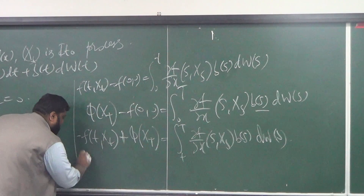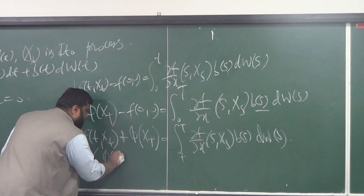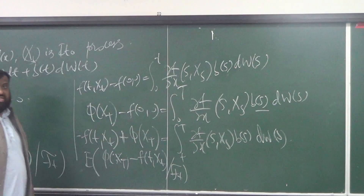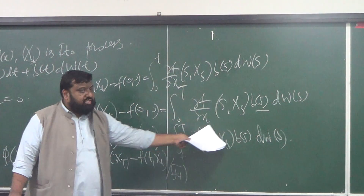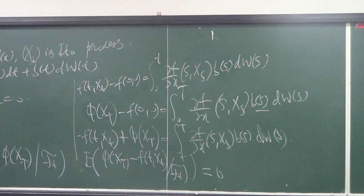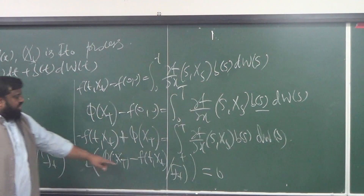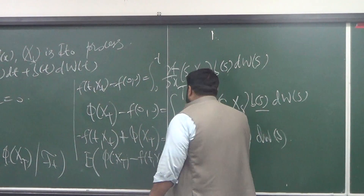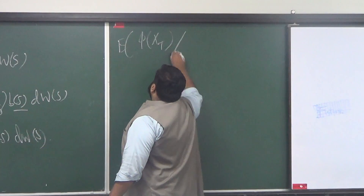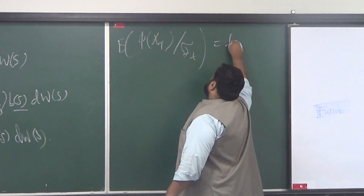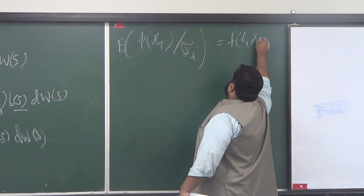On this side, I have E[phi(X_T) − f(t, Xt) | F_t]. What would be the conditional expectation of that stochastic integral? Zero — because the filtration is generated from Ws. So if it is zero, this is proved. Now f(t, Xt) is F_t-measurable, so you can take it out: E[phi(X_T) | F_t] − f(t, Xt) = 0, which gives f(t, Xt) = E[phi(X_T) | F_t].